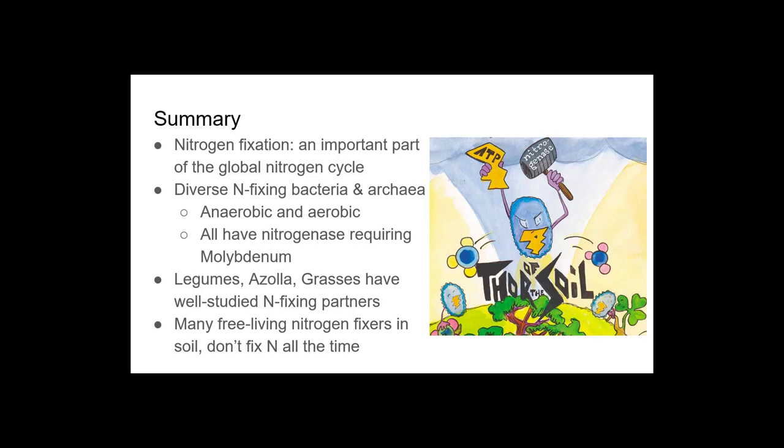In summary, nitrogen fixation by bacteria and archaea - this is more of soil with his nitrogenase hammer in one hand and his ATP lightning bolt in the other, breaking apart the nitrogen-nitrogen triple bond. I actually can't believe that someone drew this. It's a really important part of the global nitrogen cycle. It's done by this one enzyme. There's really diverse nitrogen fixing bacteria and archaea. They can be anaerobic and aerobic. They all have nitrogenase requiring molybdenum. There's legumes, azolla, and grasses all have really well studied nitrogen fixing partners. And there's also huge diversity, very understudied, of free living nitrogen fixers in soil that fix nitrogen sometimes, but probably not all the time.